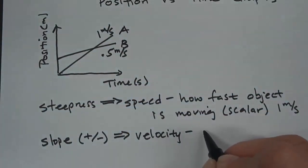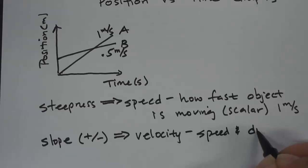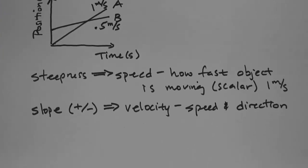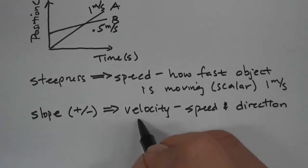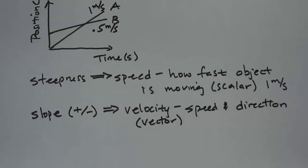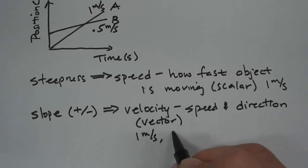Velocity is speed and direction. If you want to get more technical, we can talk about the rate at which the position changes — we'll talk about that later. For right now, we're just going to start with speed and direction. Velocity is a vector, which means it has a magnitude and direction. For example, 1 meter per second south.